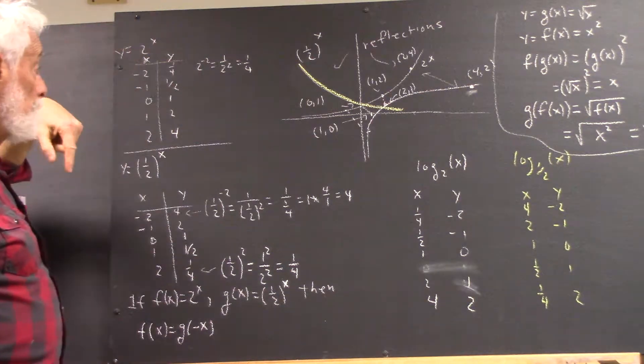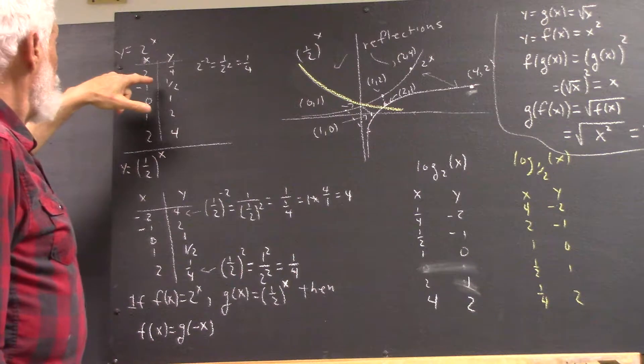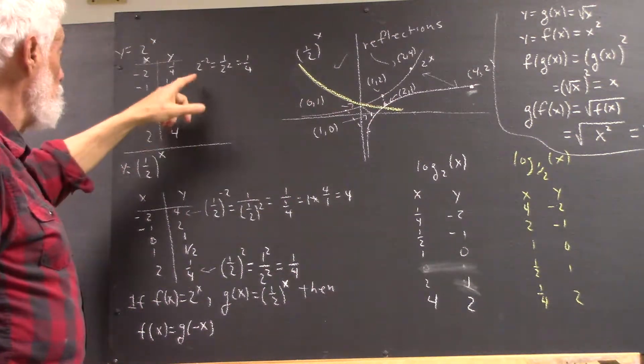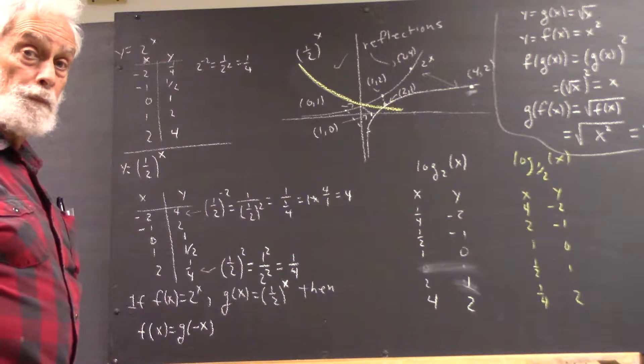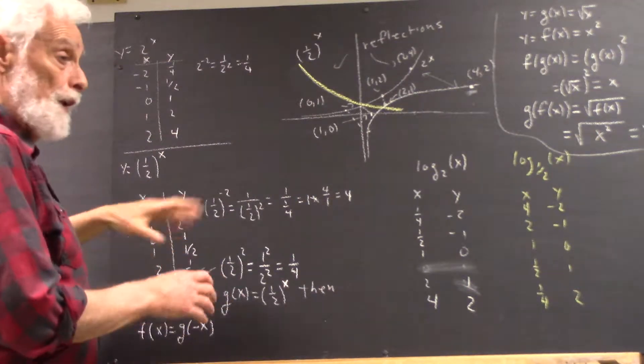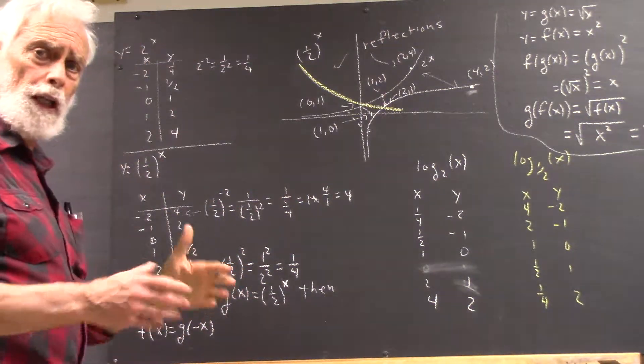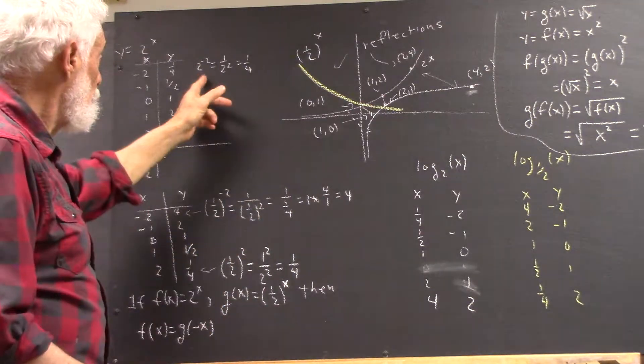And just as an illustration, if x equals negative 2, what is 2 to the x? Well, it's 2 to the negative 2. So you would write down not what you think the number ought to be. You write down 2 raised to the negative 2.